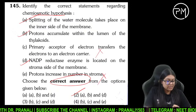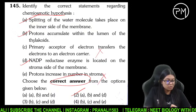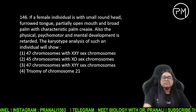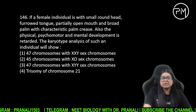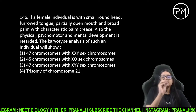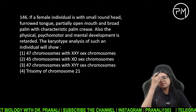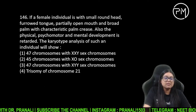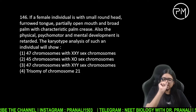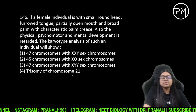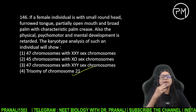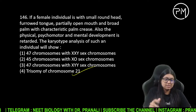145 ka answer 2 hona chahiye. Ek female individual hai jismein furrowed tongue, partially open mouth, broad palm — yeh saare characters padhte hi pata chal gaya ki NCERT se yeh kaun si cheez ho sakti hai. Ismein ho sakti hai Down syndrome, aur Down kisse hota hai — trisomy of chromosome 21 se hota hai. Toh D answer ho jayega.